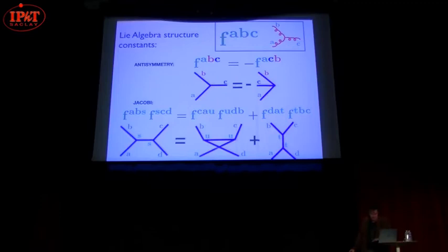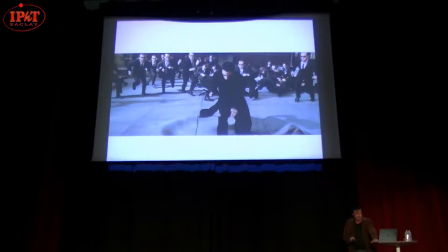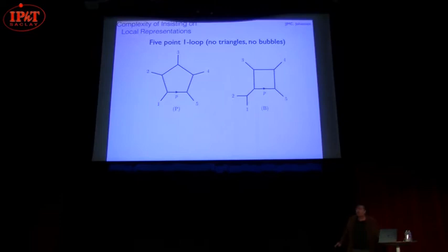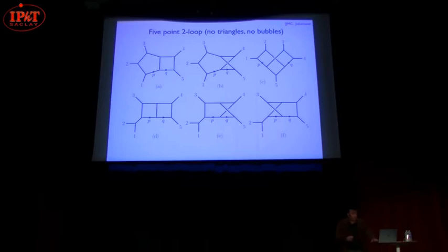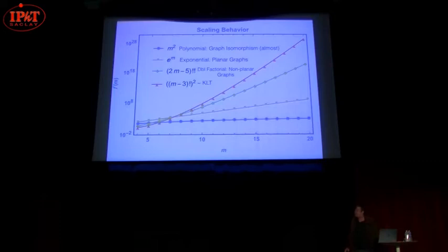So now armed with our on-shell insight, we're ready to solve all of life's problems. Turns out there's additional complexity ahead, and this additional complexity is the complexity of insisting on local representations. And just to illustrate this, I'll start with one loop, and these are just all the unique topologies. And if that one loop doesn't look so bad, at two loops it's growing a little bit, but when you look at three loops, you realize that you're actually on a factorial curve, worse than exponential.